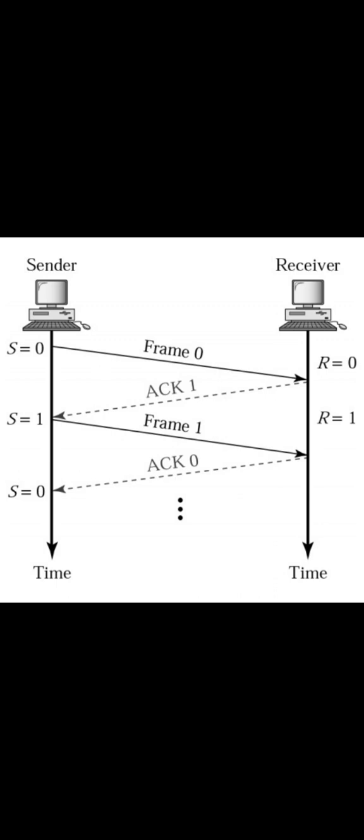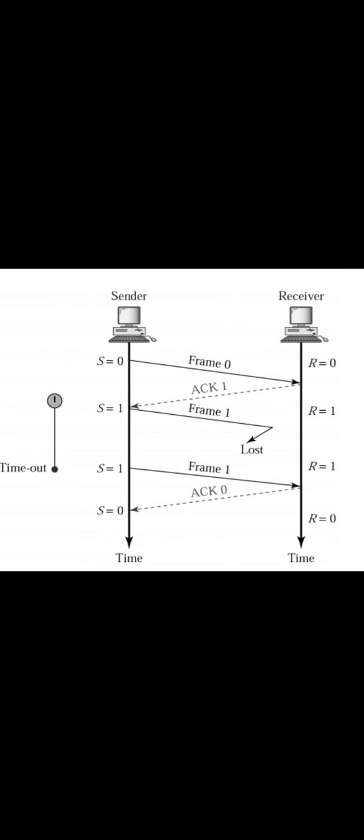Go-back-n ARQ works as follows: suppose sender A sends data to B but the address is incorrect, so the same data is sent back to A. For example, if you send an email to a wrong address, the mail is reflected back to your inbox because the user ID is wrong and the data cannot reach the other person — this is called data loss. Technical issues can also cause data loss. This is what go-back-n ARQ represents.